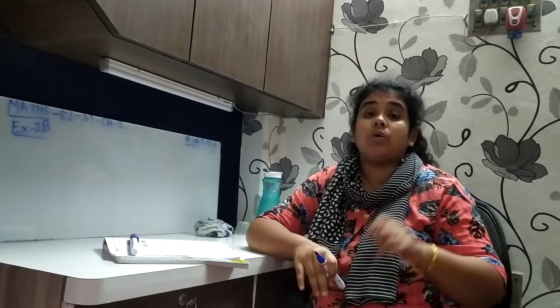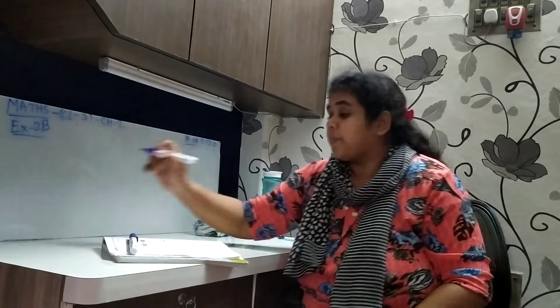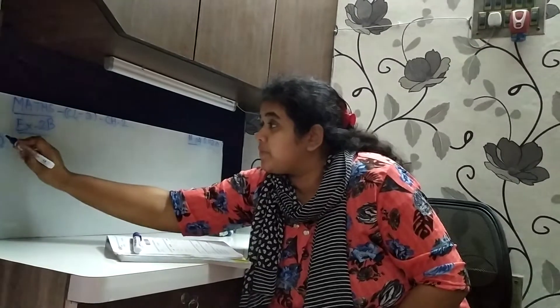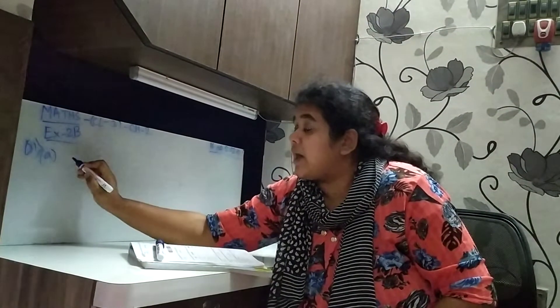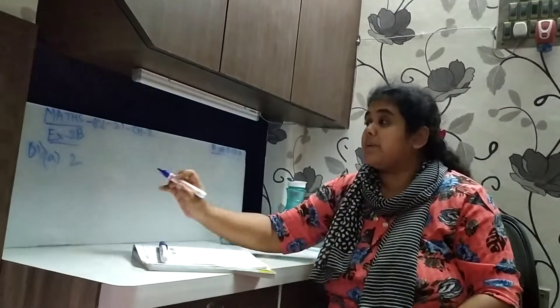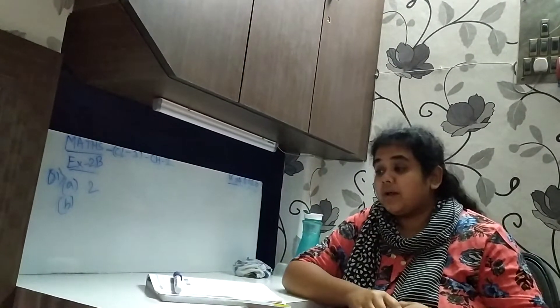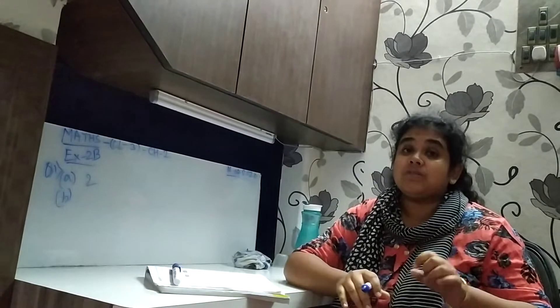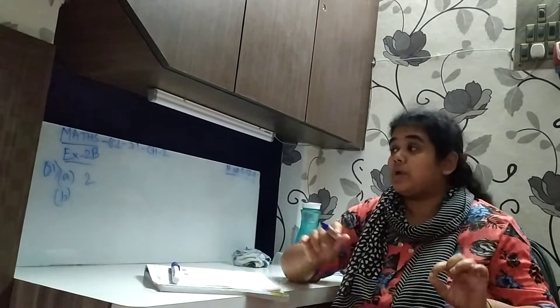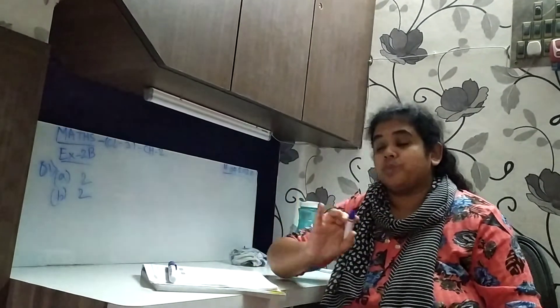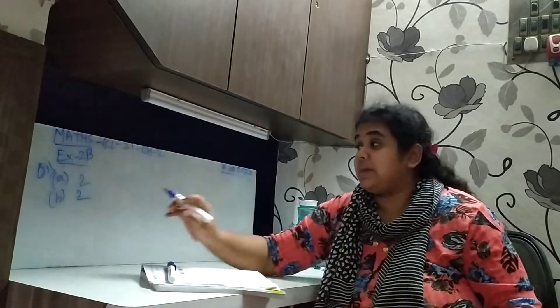So the face value of 2 is always 2. The answer is 2. Number B, 2,48,076. The face value of the underline digit 2 is also 2.